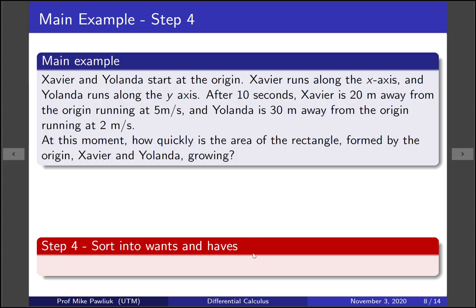Now we want to sort things into wants and haves. What is it that we actually want in this problem? Use the labels and notations you've already defined. If we read our question, it says after 10 seconds, at this moment, how quickly is the area of the rectangle growing? How can we express that in terms of a, x, and y? What we're looking for is the derivative of the area, the rate of change of the area, at 10 seconds. So we take that and express it algebraically if we can. We want the rate of change of A at 10 seconds. Now let's look at what we have.